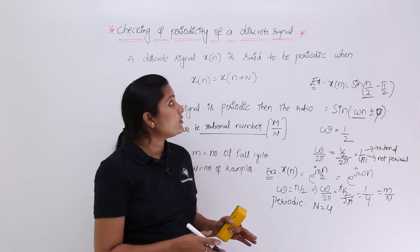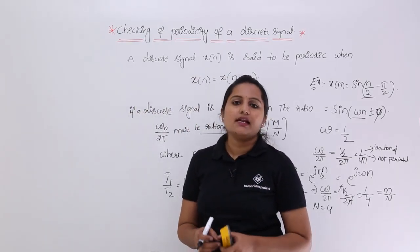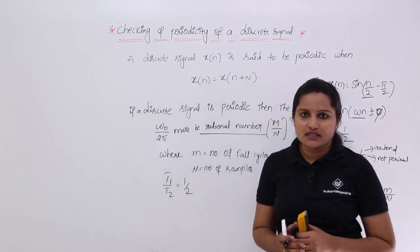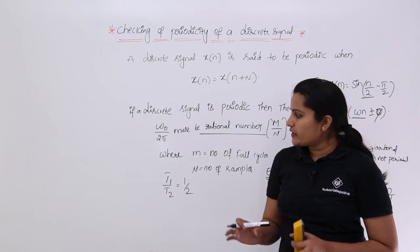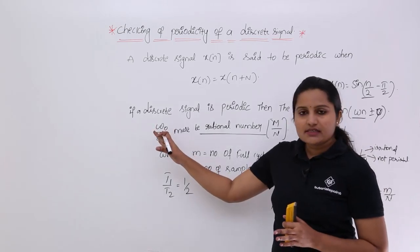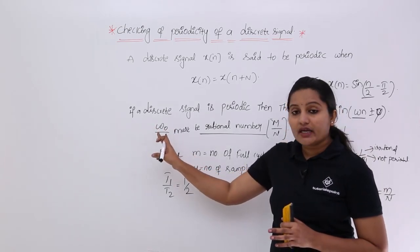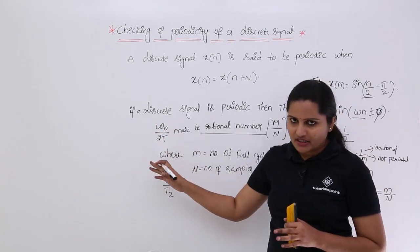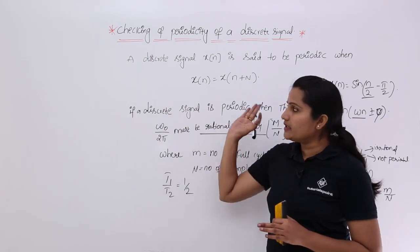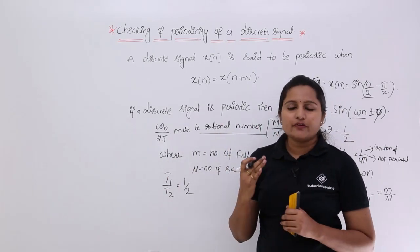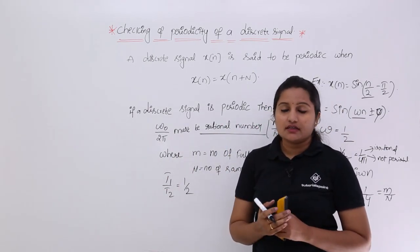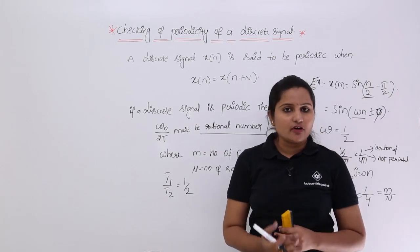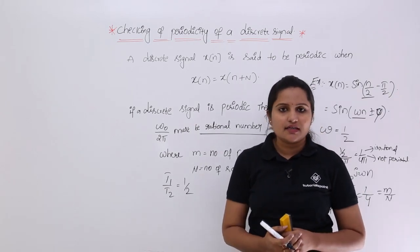To summarize discrete signal periodicity: the only method is to calculate ω₀/2π and check if it is a rational number. This is a very important concept for GATE and other technical examinations.